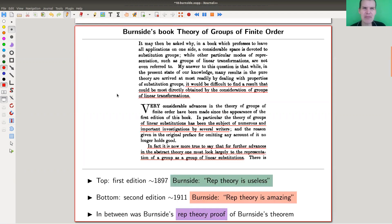The history is roughly as follows. There's Burnside's famous book, The Theory of Groups of Finite Order, which first appeared about 125 years ago, 1897. Basically, Burnside says representation theory is useless. That's the first part. And then a little bit later, 1911, there was a revision of the book, and Burnside basically said representation theory is amazing.